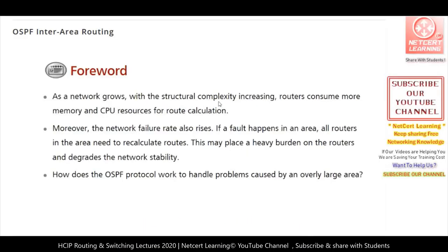With network growth and increasing structural complexity, routers consume more memory and CPU resources for route calculation. In a single-area backbone (area zero), the more routers included in the same area, the more complex the shortest path first calculation becomes. Moreover, the network failure rate also rises — if a fault happens in an area, all routers must recalculate routes, causing high CPU utilization and degrading network stability.